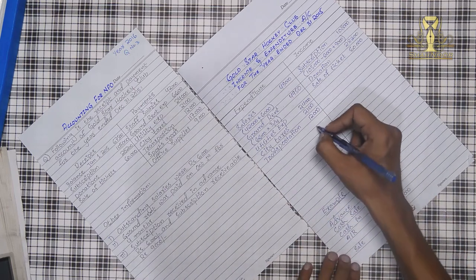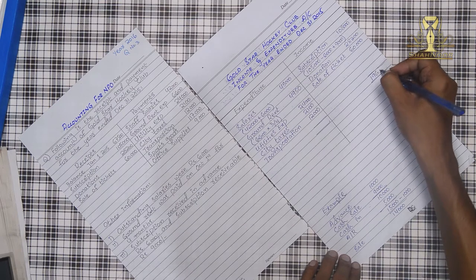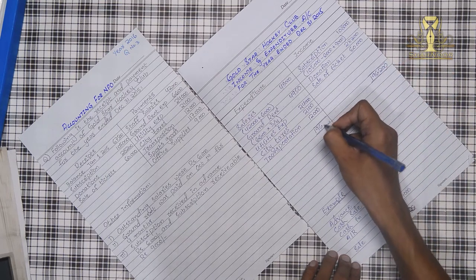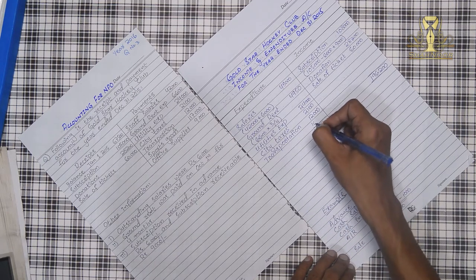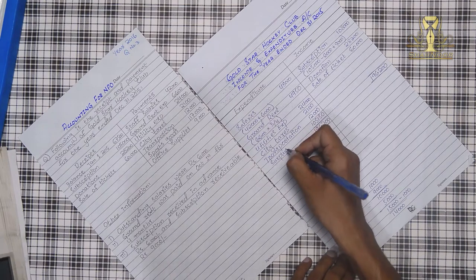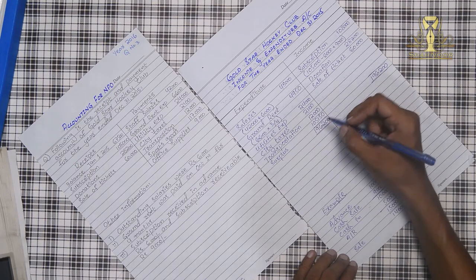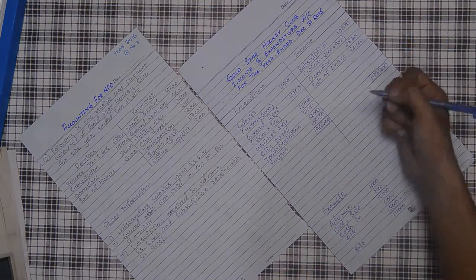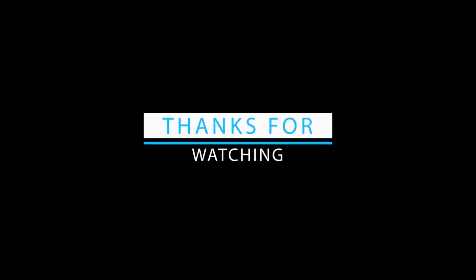Now we have totaled these two sides. This side will be balanced. The balancing amount is $15,150. This is our surplus. If the amount came on the other side, it would be deficit. In income and expenditure, this is our surplus. If we make a profit and loss statement, this is our profit. This is our surplus.